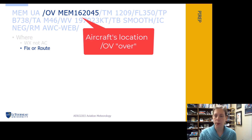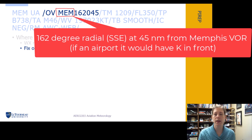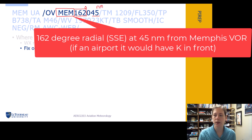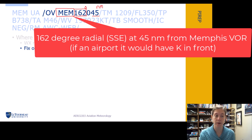In this example, we were somewhere near MEM, the Memphis VOR. This is how we read this part: we are on the 162 degree radial at 45 nautical miles. Remember, distances are given in nautical miles unless we're looking at visibility information.